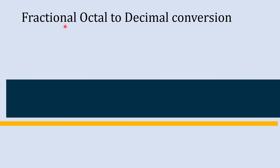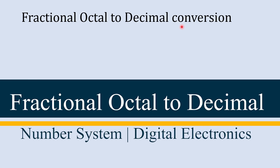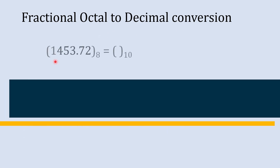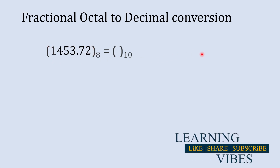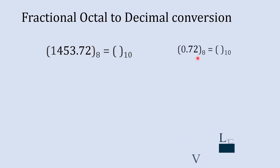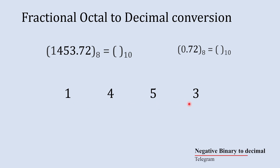Now it's time to convert a fractional octal number into a decimal number. For that we'll take one fractional octal number. Here also we'll first deal with the whole number part and keep the fraction number part aside. To convert the octal number into decimal, we start with the rightmost digit — the ones place — then the tens, hundreds, and thousands place.